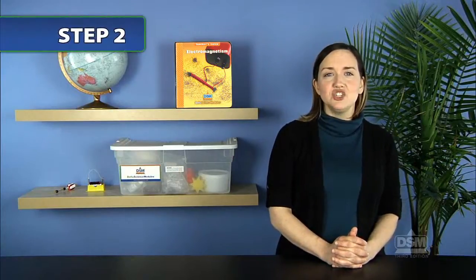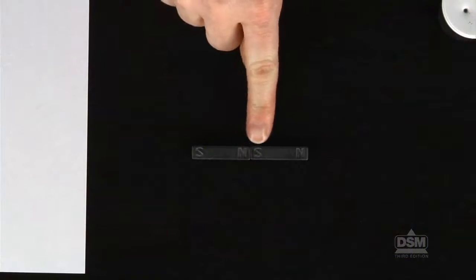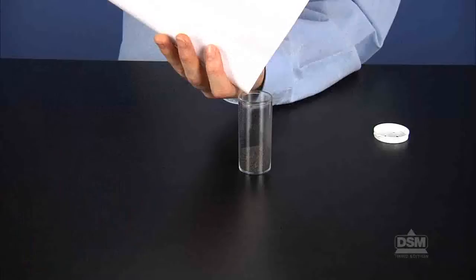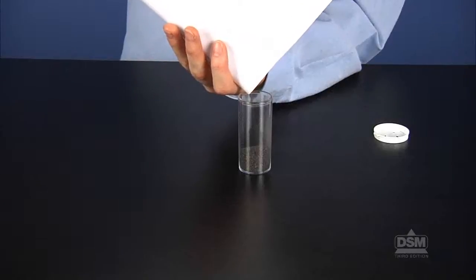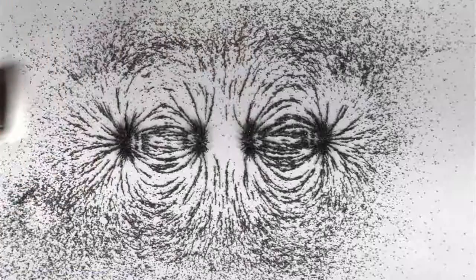Next, have each team complete the investigation described on the Activity Sheet. First, they will observe the patterns made by the iron filings when unlike poles are near each other. Have students pour the filings back into the vial, then repeat the procedure to observe the pattern when like poles are near each other.